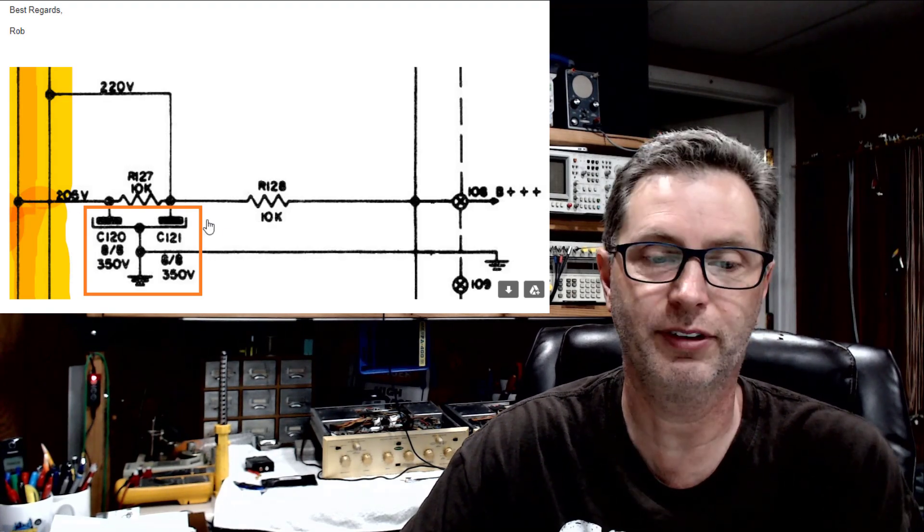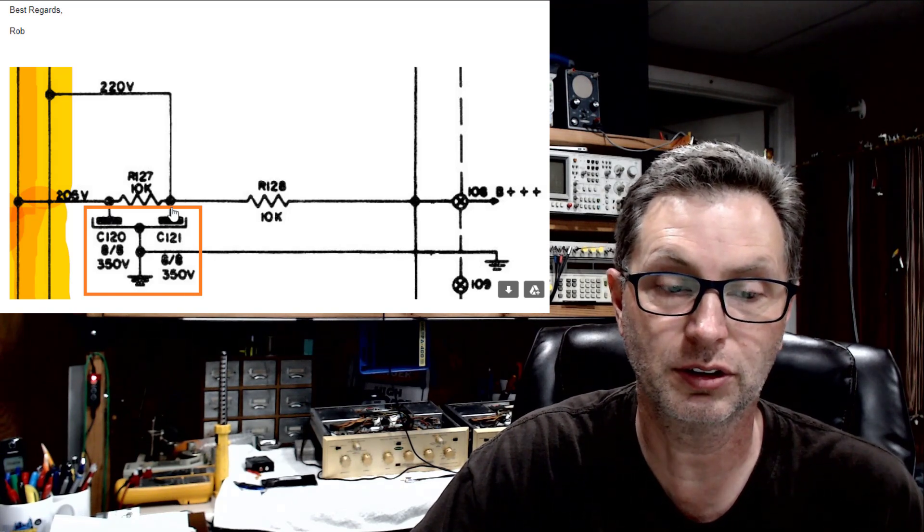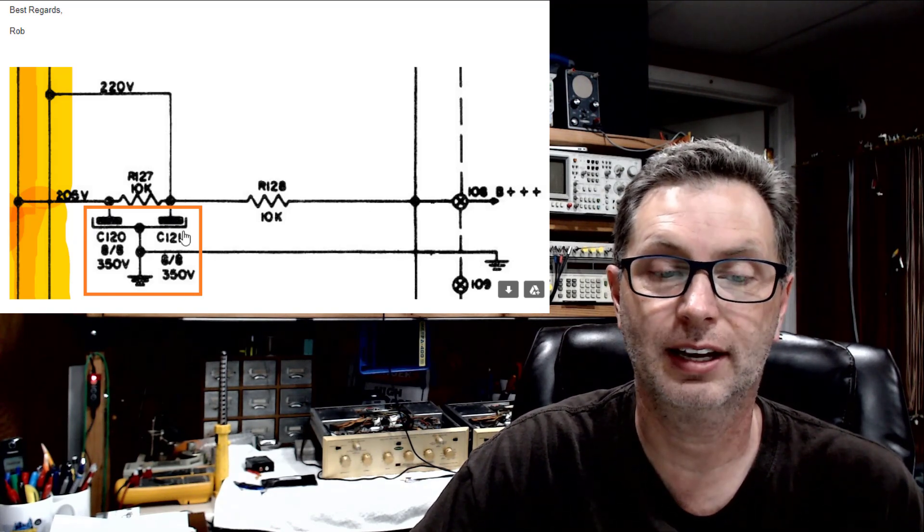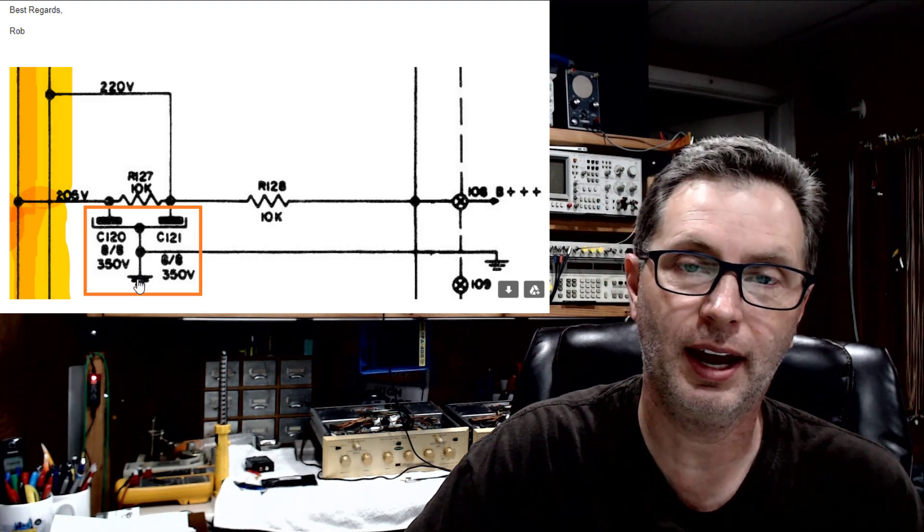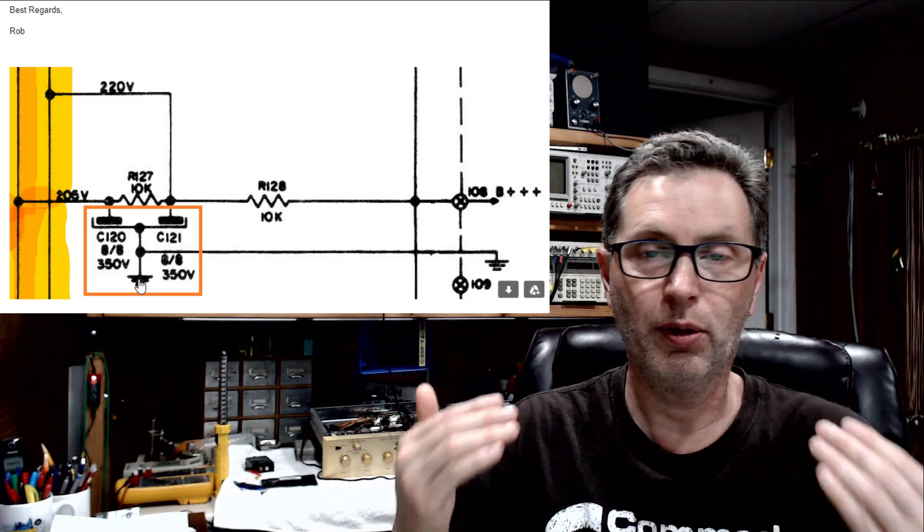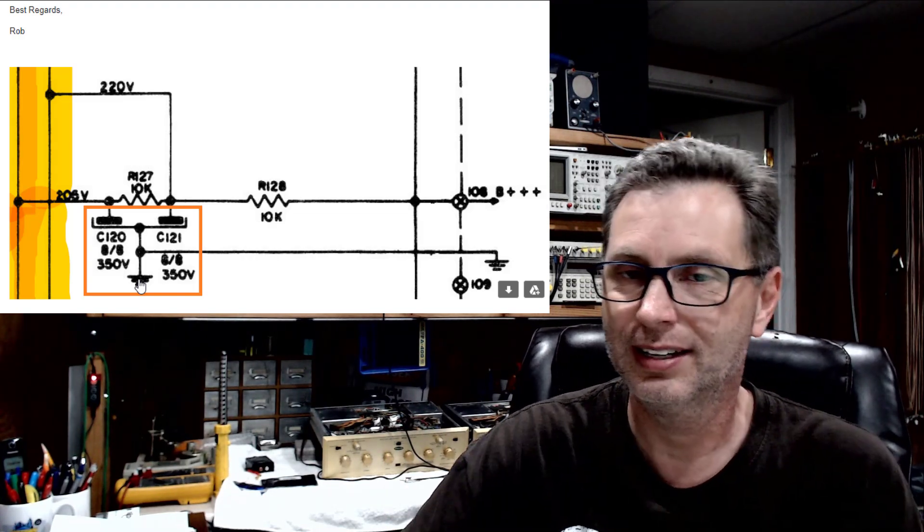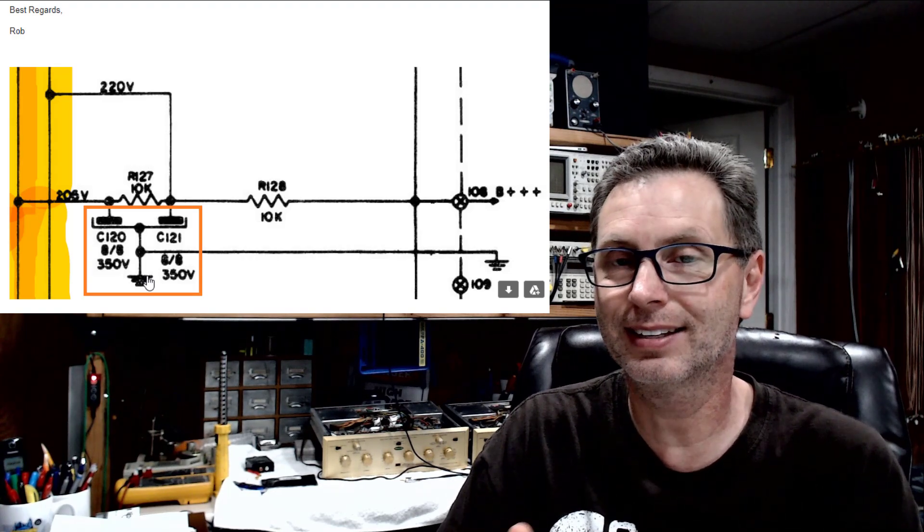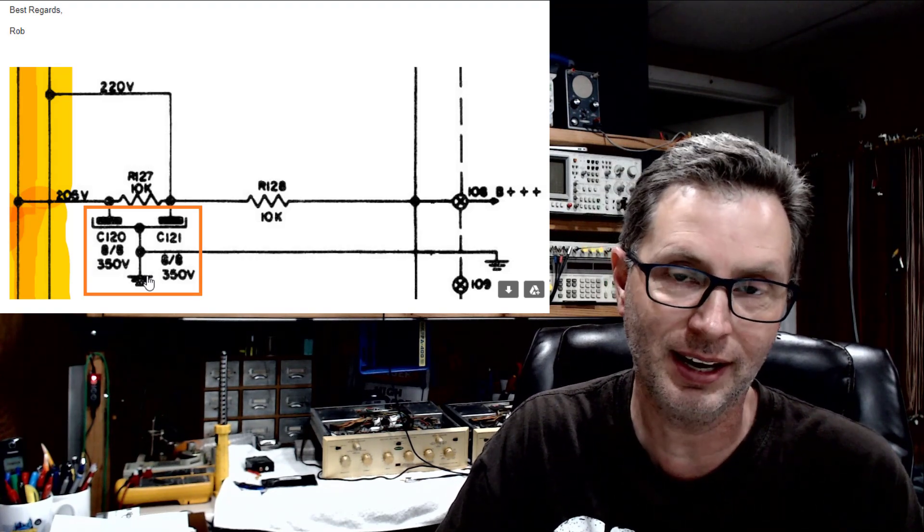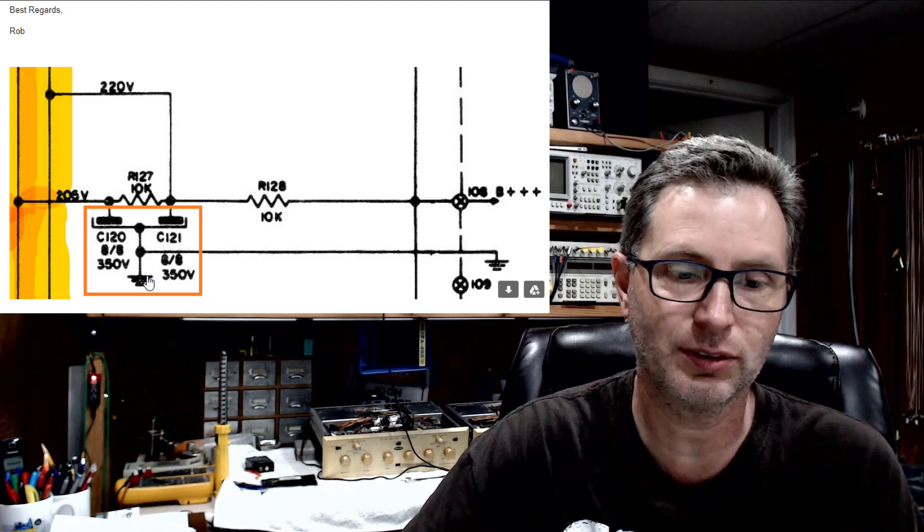But back to this little device inside of orange here. The positive connections are here. The negative connections, if you'll notice, they come down and they're tied and they're common. What this is saying is that both of the negative sides of these capacitors are tied together. And typically you'll see that in a can style capacitor, a metal can. Typically the can is then tied off to ground, and that's what this is showing right here.